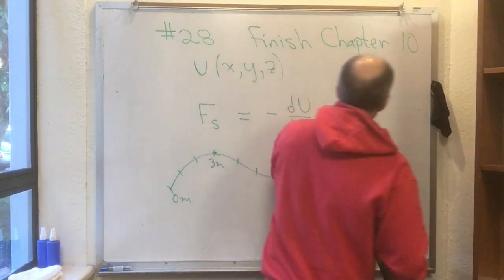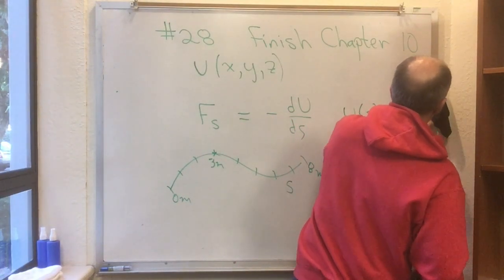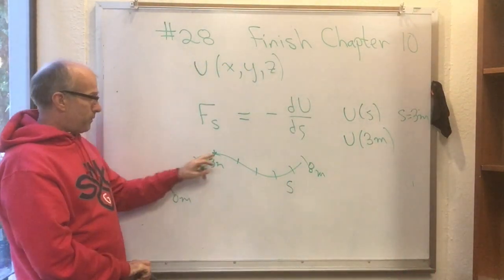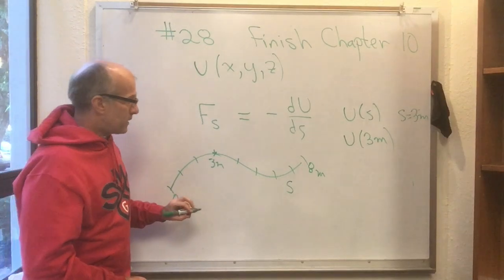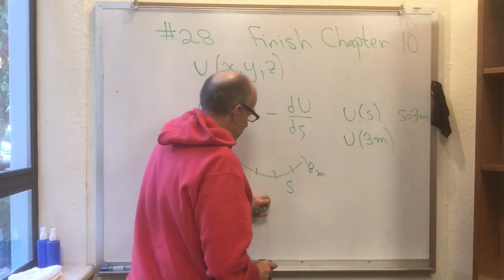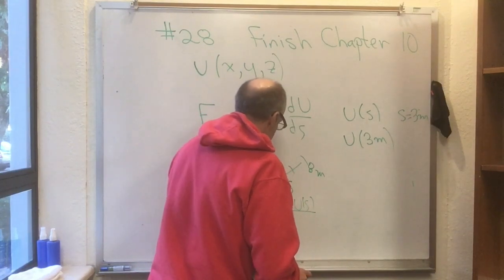So I'm saying what's U of S when S equals 3 meters? That's saying what is U at the value of 3 meters? And then I can do this. I can make this combination. I can make U at S plus delta S minus U at S, and then divide that by delta S.